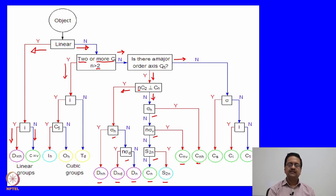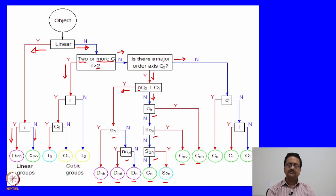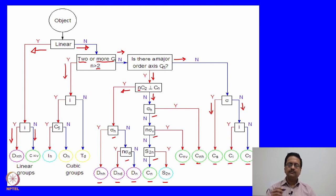On the other hand, when there is no Cn — meaning no C2, C3, or C4 — we ask: does it have a mirror plane? If the molecule has a mirror plane, the answer is yes and we go down one way; if the answer is no, we go down another way and end up with 3 point groups. We need to keep this flow chart in mind, and for easy reference in the following slides, I have kept this chart in a smaller version.